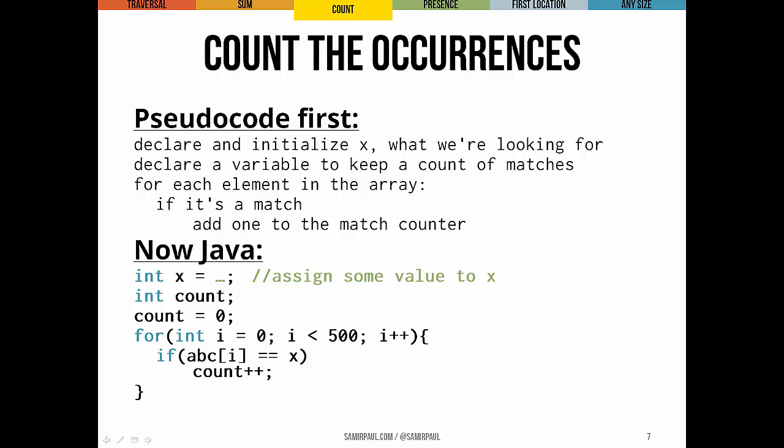The Java code looks pretty similar. If you'd like, pause it for a second and take a look. The key here is every time we're referring to ABC sub i, the current element of the array. Every time we go through the loop, it's a different value.